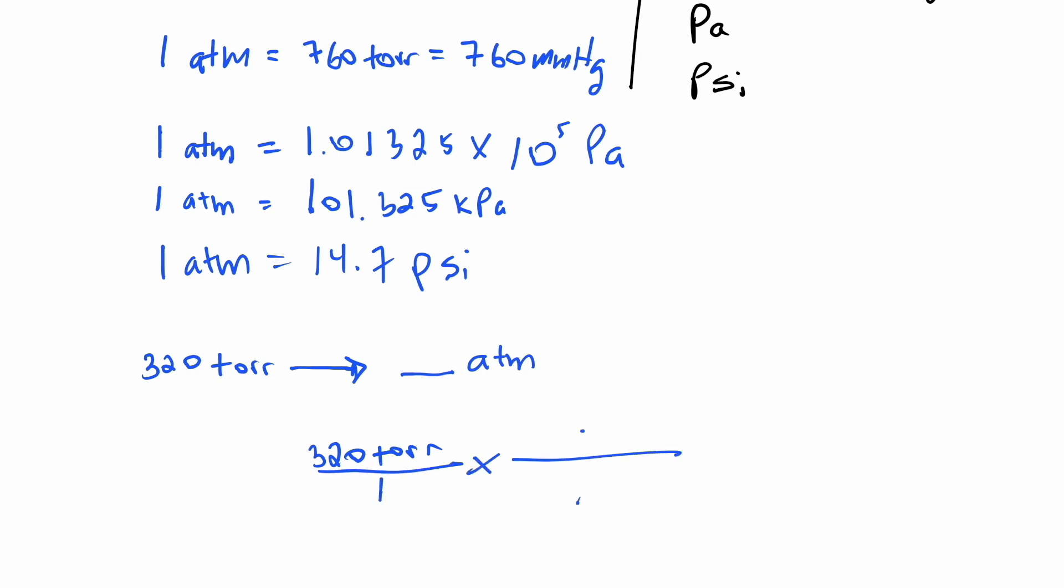Then you want to say times, put a fraction bar, and on the right side you write your equivalent ratio. Well, we know that 760 torr is equivalent to 1 atmosphere. You want your torrs to be on the bottom so that the torr units can diagonally wipe out. So you wipe out your torr units, and then you can multiply 320 times 1 divided by 760 torr gives you 0.421 atmospheres.